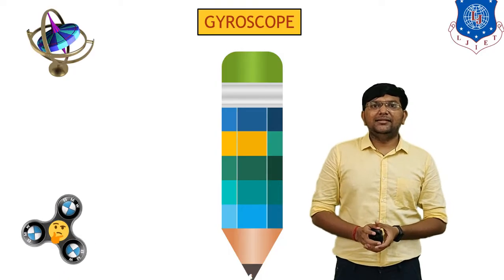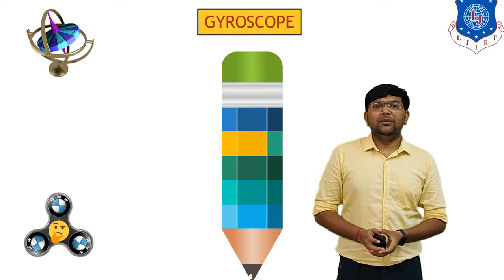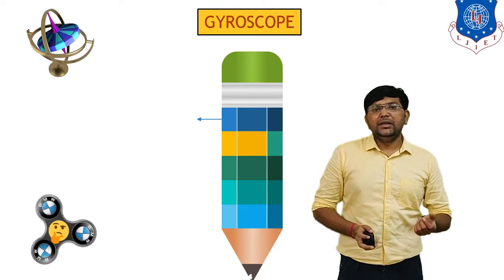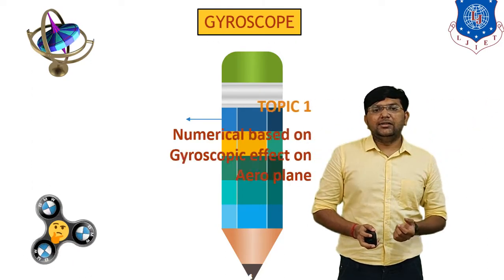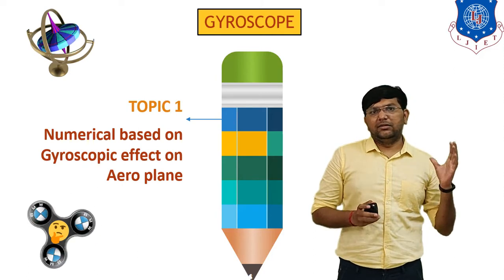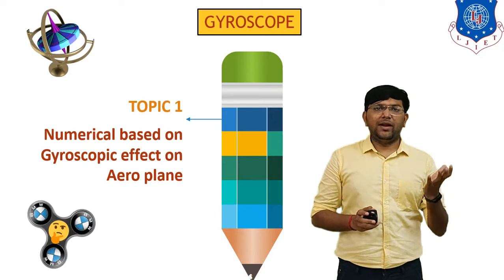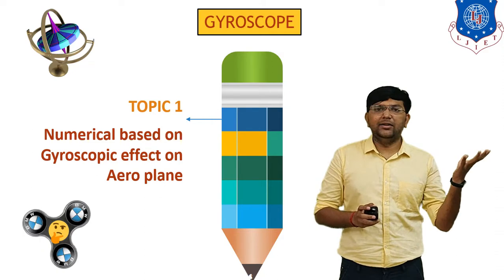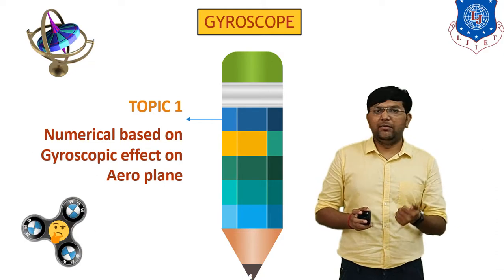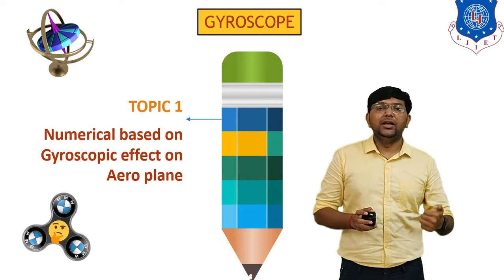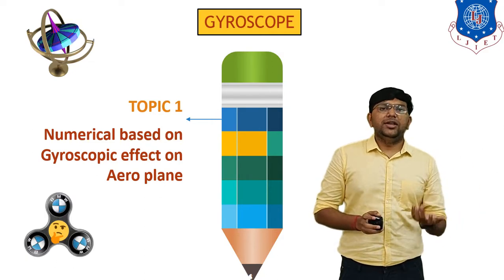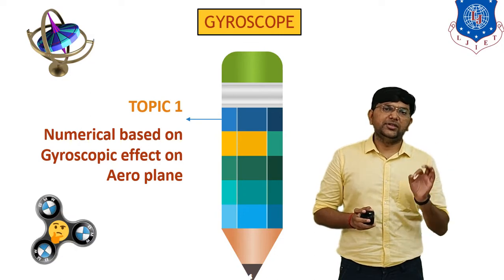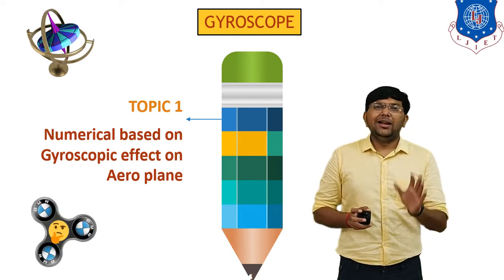Hello students, myself Nuhul Kodya from Elgin Institute of Engineering and Technology. In the last session we discussed which type of effect occurs in aeroplanes due to the reactive gyroscopic couple. In today's session we will discuss one numerical based on the gyroscopic effect on aeroplanes.